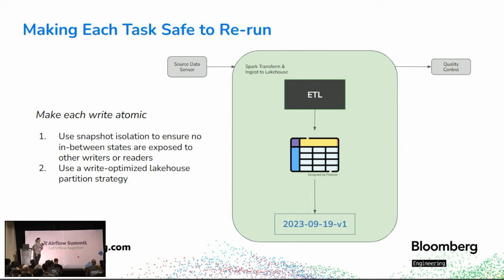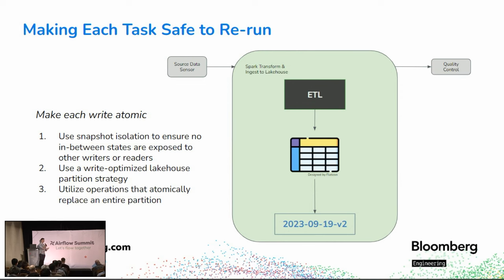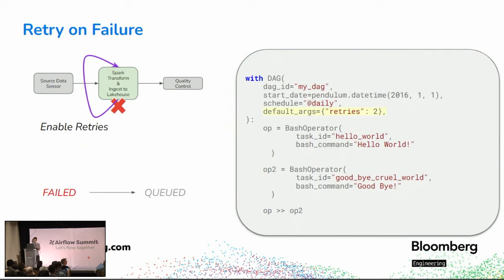Next, we can use a write-optimized lakehouse partition strategy where you intentionally choose a partitioning strategy on your table that aligns with the ingestion frequency of your DAG. In this example, we choose a daily partition in the lakehouse that aligns with the daily ingestion pattern of the Airflow DAG. This allows us to utilize lakehouse operations that replace an entire partition atomically — so any future rerun will atomically replace that specific day's data in a single transaction, with no in-between states and no duplicate records.